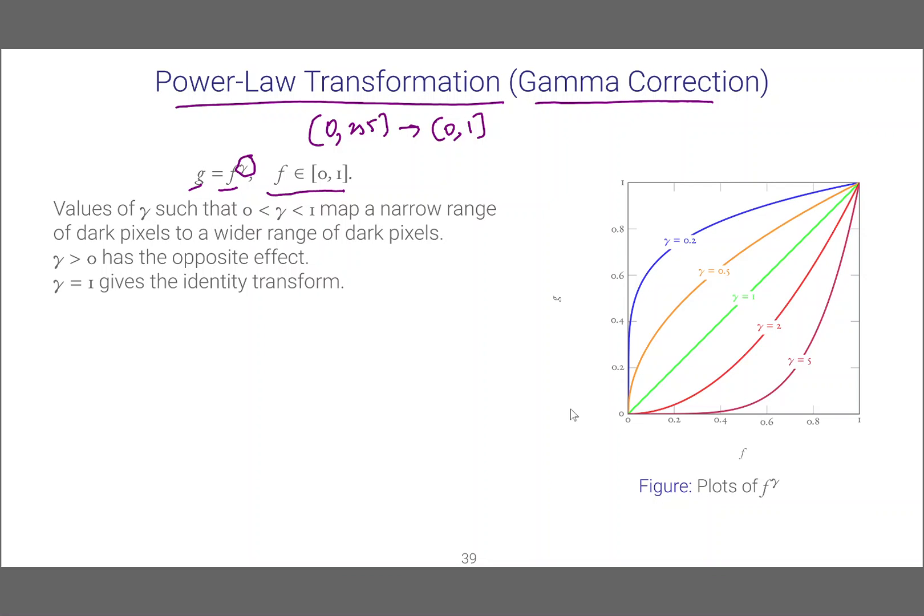When we consider different kinds of values of gamma we get different types of effects. If we consider gamma values between 0 and 1, the operation maps a narrow range of dark pixels to a wider range of dark pixels.